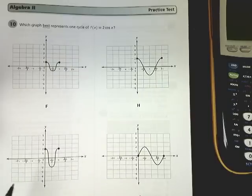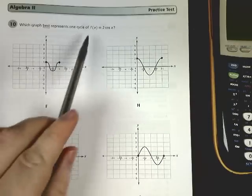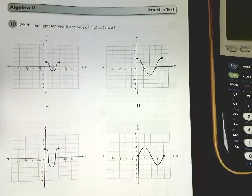This is question number 10 on the Algebra 2 EOC. Which graph best represents one cycle of f(x) = 2cos(x)?